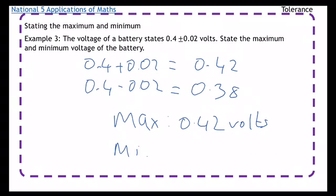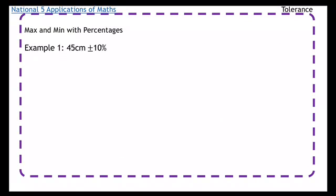Okay, right, now we're going to look at it with percentages. What we've got to do instead is just work out the percentage first and then do exactly what we did. So you work out 10 percent of 45 and then you add it on and then take it away.